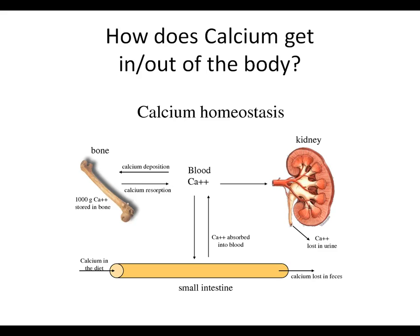When talking about calcium homeostasis, it's important to recognize that there are three different ways that calcium gets into the body and leaves the body. In the diet, calcium comes in through the small intestine — it can be absorbed into the bloodstream, and this is one way that calcium levels in the bloodstream are regulated, by entry.